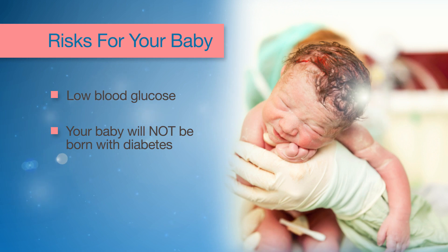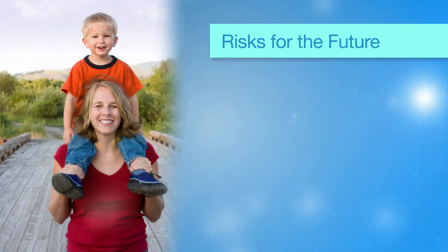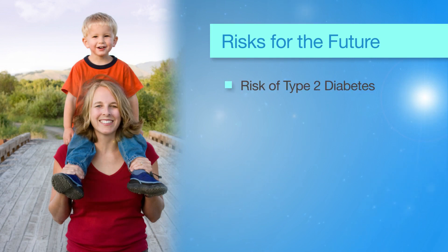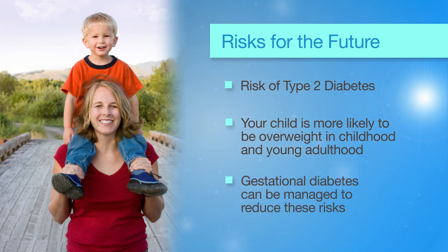Your baby will not be born with diabetes. There are also health risks for you and your baby in the future. Having gestational diabetes means that both you and your baby are at risk of developing type 2 diabetes later in life. Your baby is also more likely to be overweight in childhood and young adulthood. Although there are risks associated with gestational diabetes, the good news is that gestational diabetes can be managed to reduce these risks.